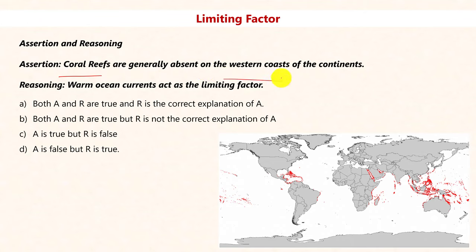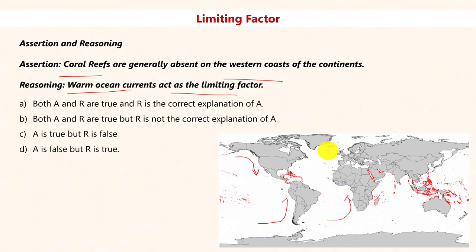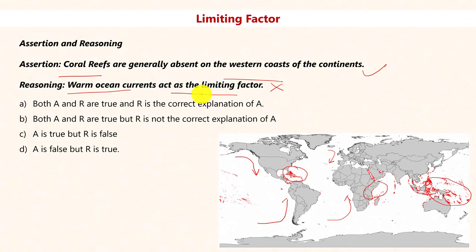Coral reefs are generally absent on the western coast of continents. The stated reason is that warm ocean currents act as the limiting factor — but this is wrong. Western margins of continents are dominated by cold currents: Peruvian current off South America, Benguela current off Africa, Canaries current off Europe, and Alaska current. Coral reefs are concentrated on the eastern margins where warm waters prevail. The assertion is true, but the reasoning is wrong — it should be cold currents, not warm currents. The answer is: A is true but R is false.